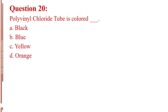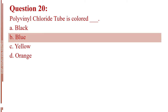Question number 20. Polyvinyl chloride tube is colored blank. Letter A, black. Letter B, blue. Letter C, yellow. Letter D, orange. The answer is Letter B, blue.